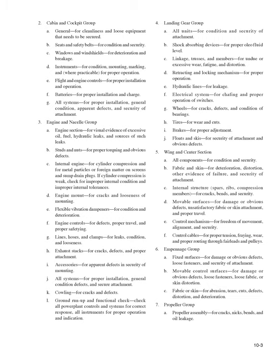5. Wing and center section — (A) All components, for condition and security; (B) Fabric and skin, for deterioration, distortion, other evidence of failure, and security of attachment; (C) Internal structure — spars, ribs, compression members — for cracks, bends, and security; (D) Movable surfaces, for damage or obvious defects, unsatisfactory fabric or skin attachment, and proper travel; (E) Control mechanism, for freedom of movement, alignment, and security; (F) Control cables, for proper tension, fraying, wear, and proper routing through fairleads and pulleys.